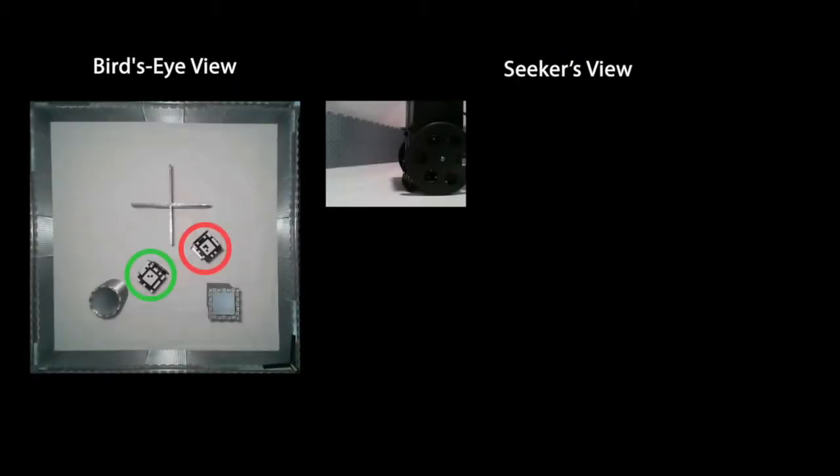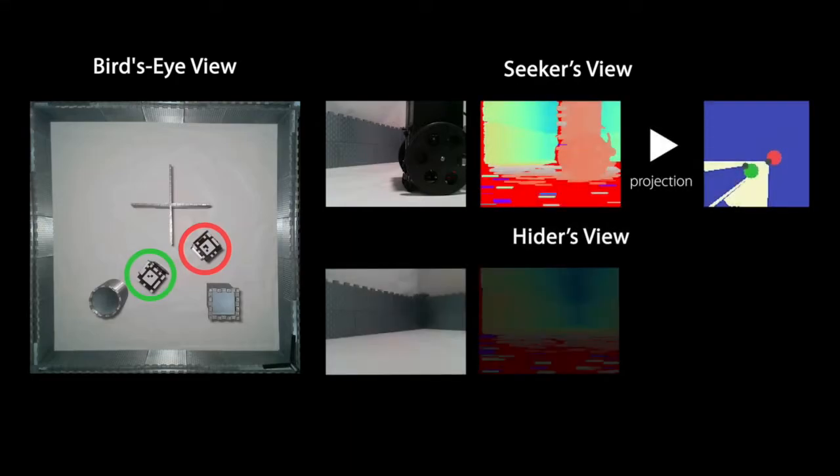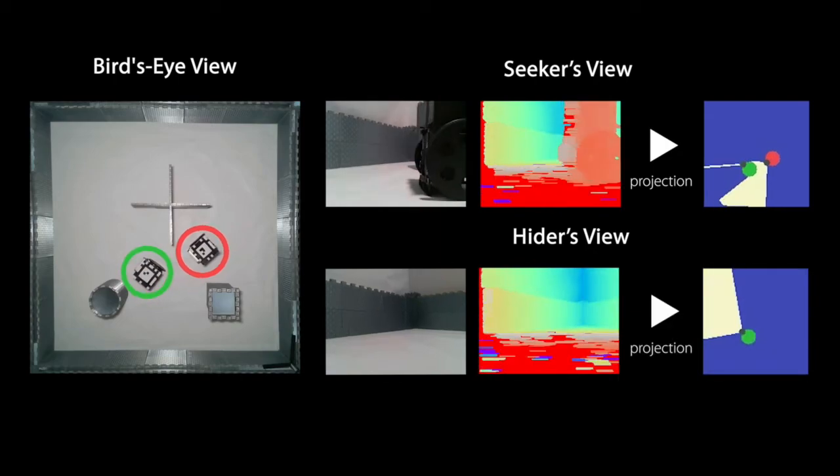Both the hider and seeker robot sense the world through a first-person RGBD camera. We project the RGBD information to a top-down visibility map as their visual observations.